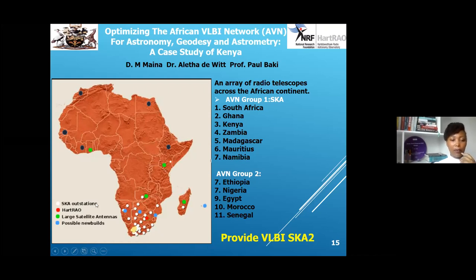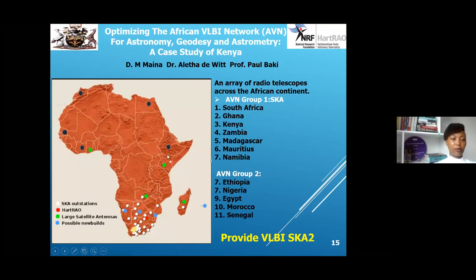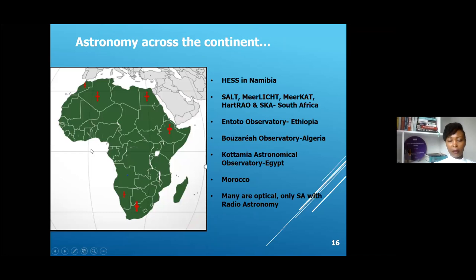The proposed SKA will be built in South Africa, and we want to provide VLBI capability to the core stations there. There's a proposal to convert satellite dishes formerly used for communication across the African continent for radio astronomy purposes, so they provide VLBI to the SKA. Proposed conversions include dishes in Zambia, Kenya, Madagascar, Mauritius, and Ghana.